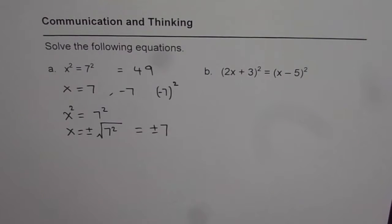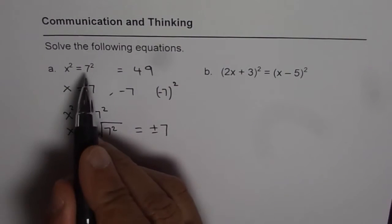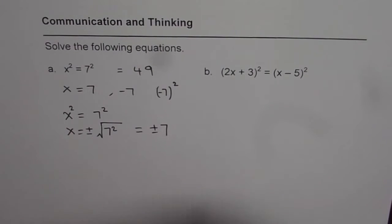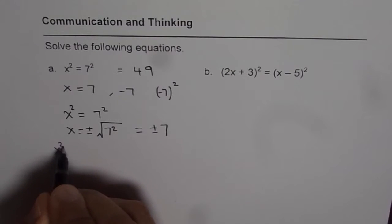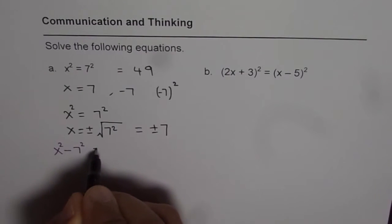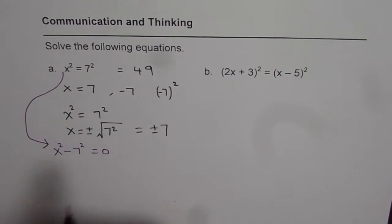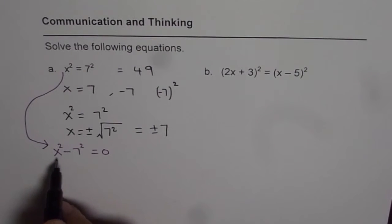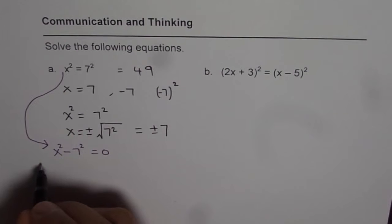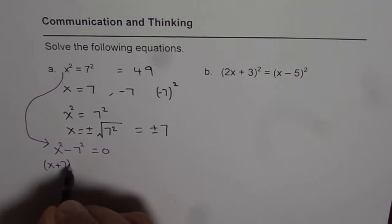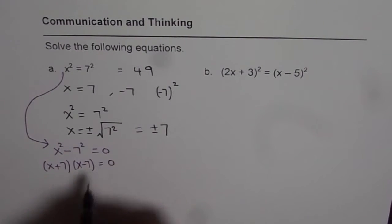Now I will show you an alternate method of doing the same thing correctly. That is, let's bring 7 squared to the left side. Now let me use a different ink to solve. So we get x squared minus 7 squared equals to 0. Right? Now if you see from here, if I bring 7 to the left side, I can write this as x squared minus 7 squared equals to 0. Now this is difference of squares. We can factor x plus 7 times x minus 7 equals to 0.